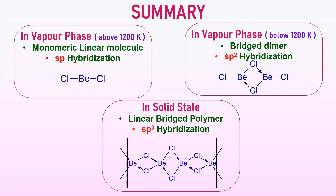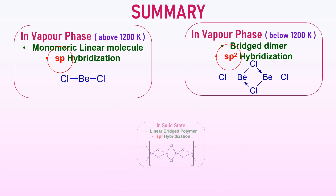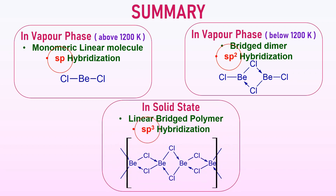Let us summarize once again. In the vapor phase above 1200 K, beryllium chloride exists as a monomeric linear molecule with SP hybridization. Below 1200 K, it exists as a bridged dimer in the vapor phase with SP2 hybridization. In the solid state, it exists as a linear bridged polymer with SP3 hybridization.